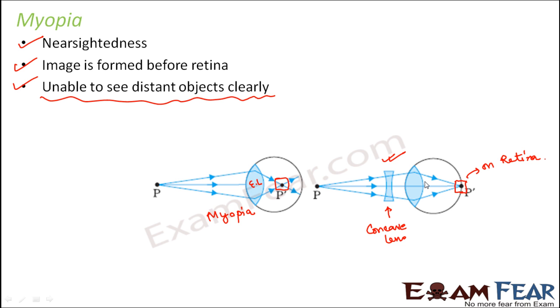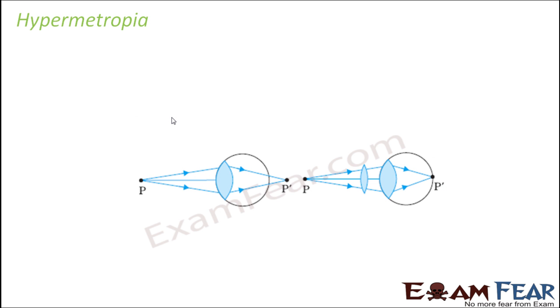This is corrected using the concave lens. Next is hypermetropia. It is just the opposite of myopia. Some people are able to see distant objects clearly but they cannot see nearby objects. They are said to have farsightedness. Here, the image is formed beyond the retina.